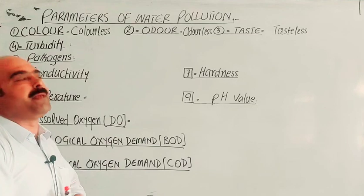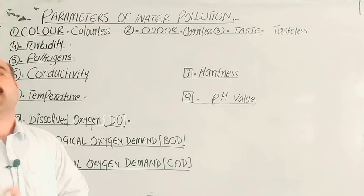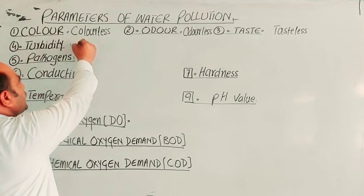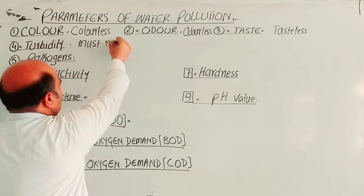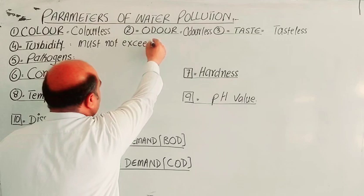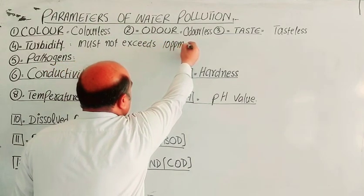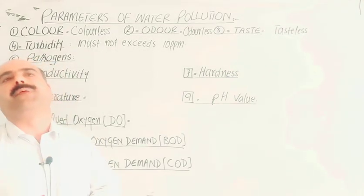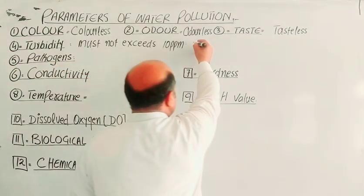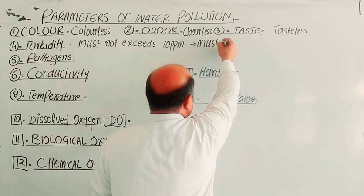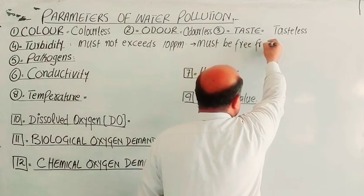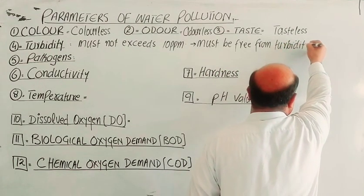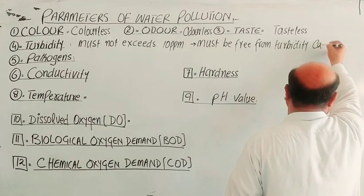Third parameter: Turbidity — pure water must be free from turbidity. Turbidity must not exceed 10 ppm. It is caused by dissolved materials in the water.